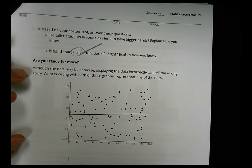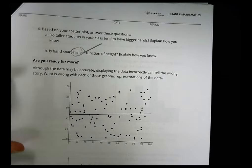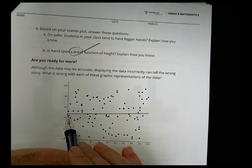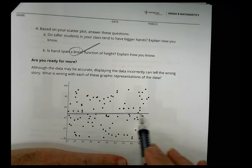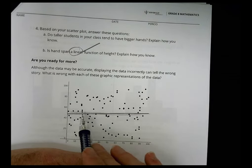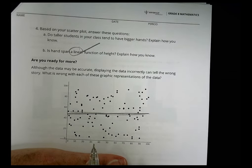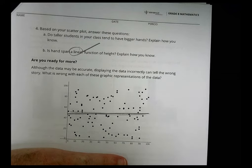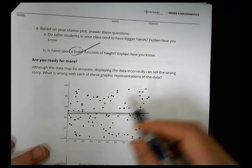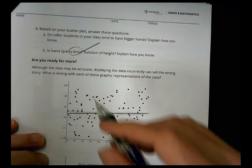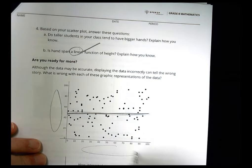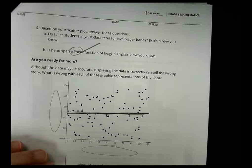Although the data may be accurate, displaying the data incorrectly can tell the wrong story. So what's wrong with these graphic representations? On the first one, we have data all over the place, and we have a line. Now, a line should show you kind of where things fit, or if it's what we call a line that best fit. Like, does it show a pattern or a trend? This line makes no sense. The data is all over the place, and they just drew a line. It doesn't make sense. You don't see things increasing and decreasing. It's just pretty random there. So the line doesn't make a lot of sense. Also, where are the labels? What are we talking about here? I have no idea. So that's a problem with that graph there.